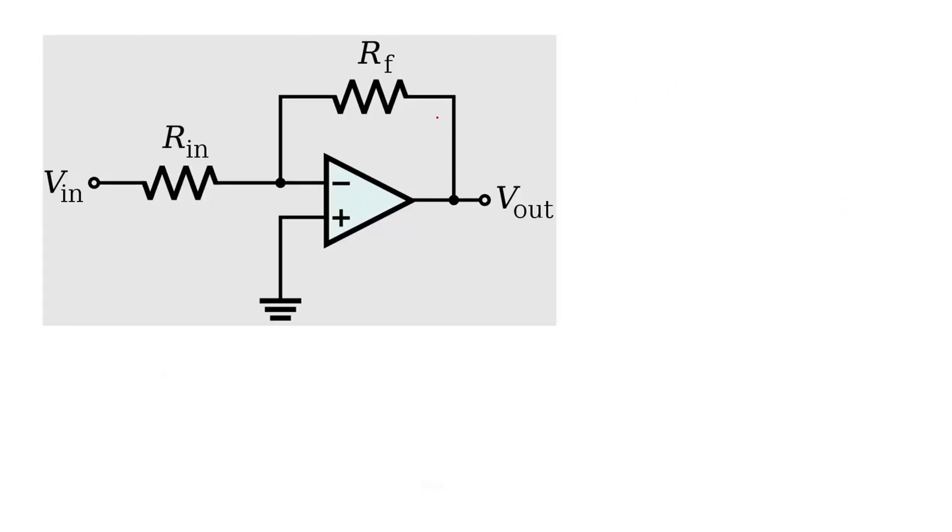Before solving this problem, we need to understand what is an inverting amplifier. In inverting configuration, the output voltage Vout is 180 degrees out of phase with input voltage Vin.